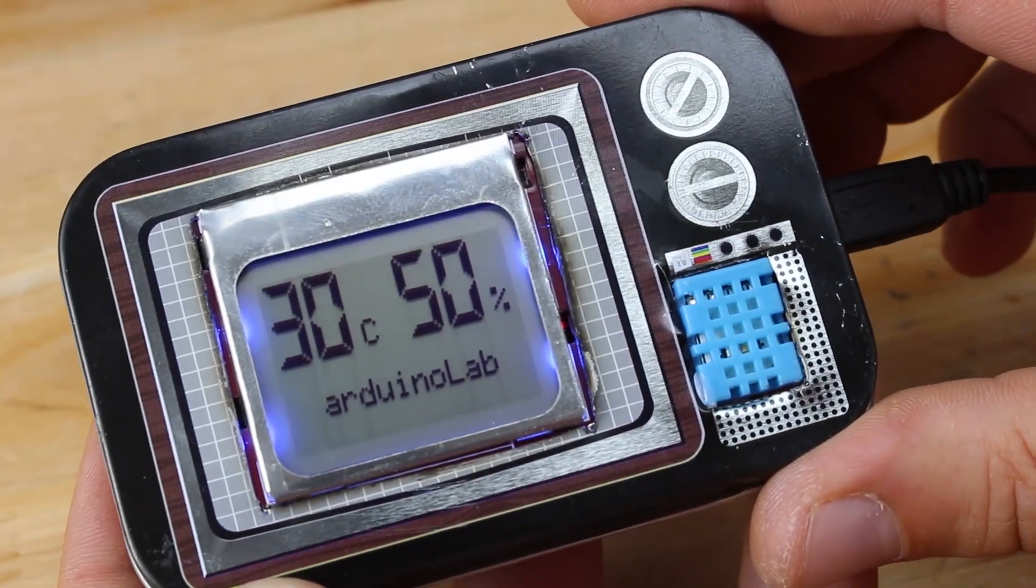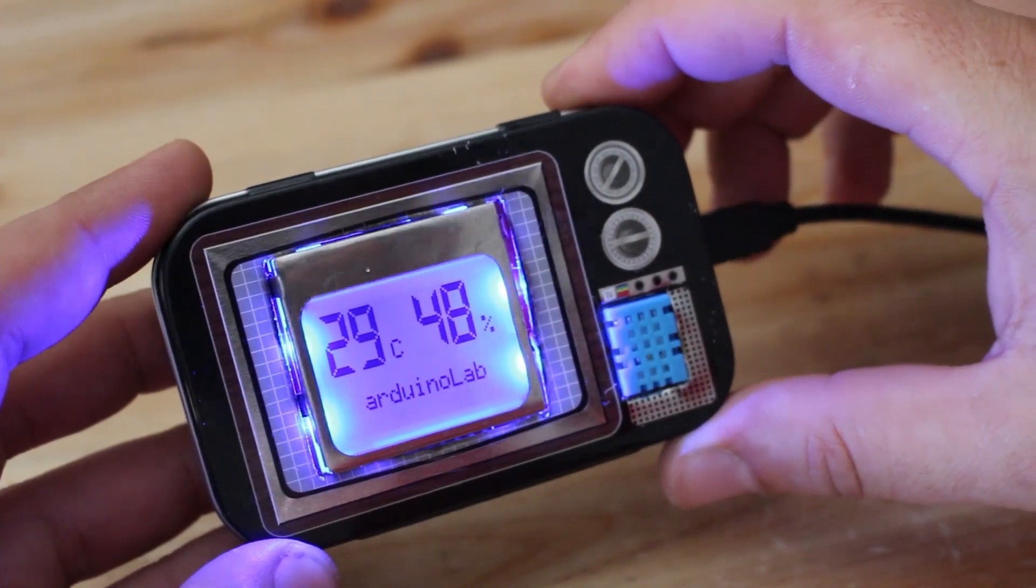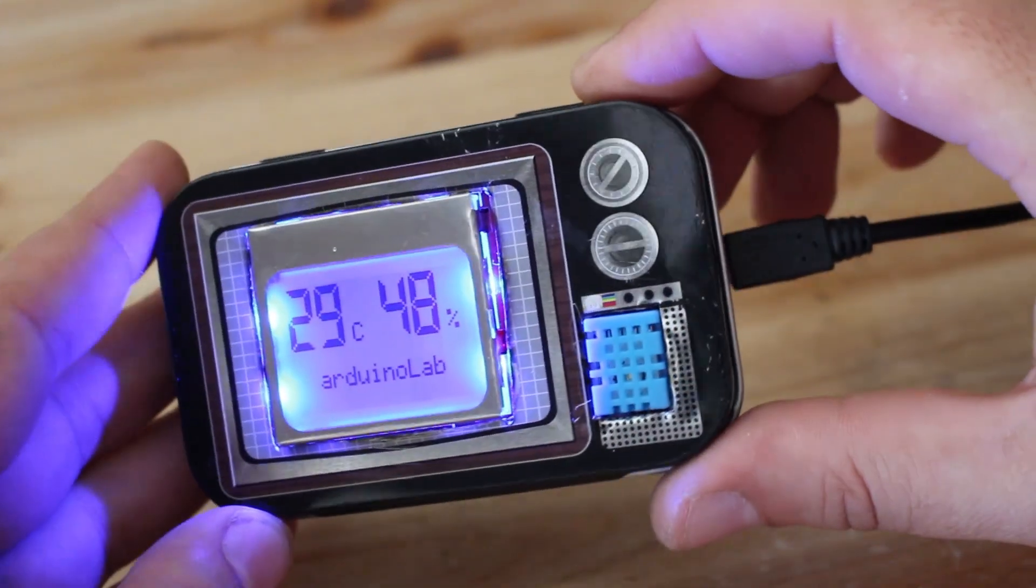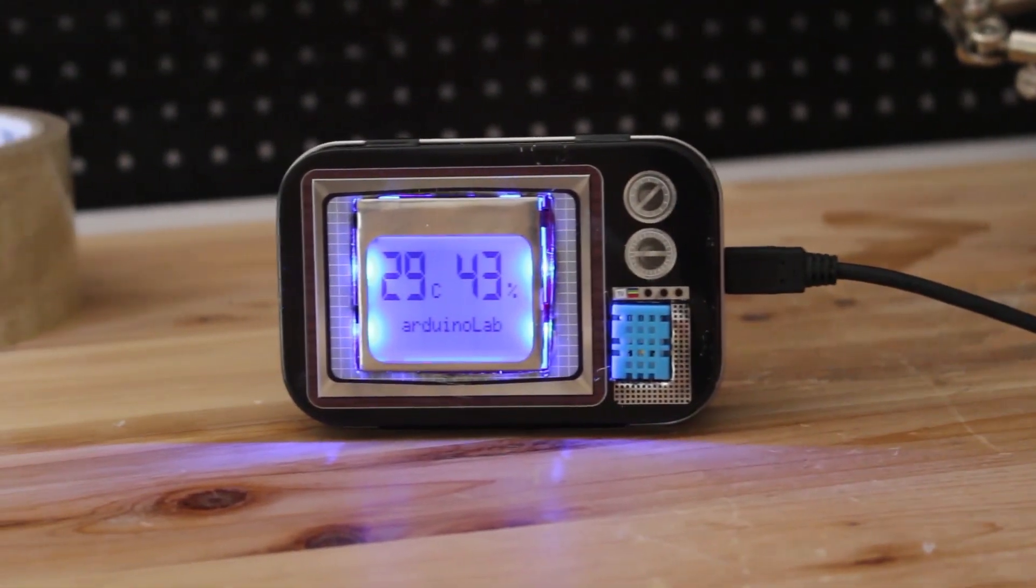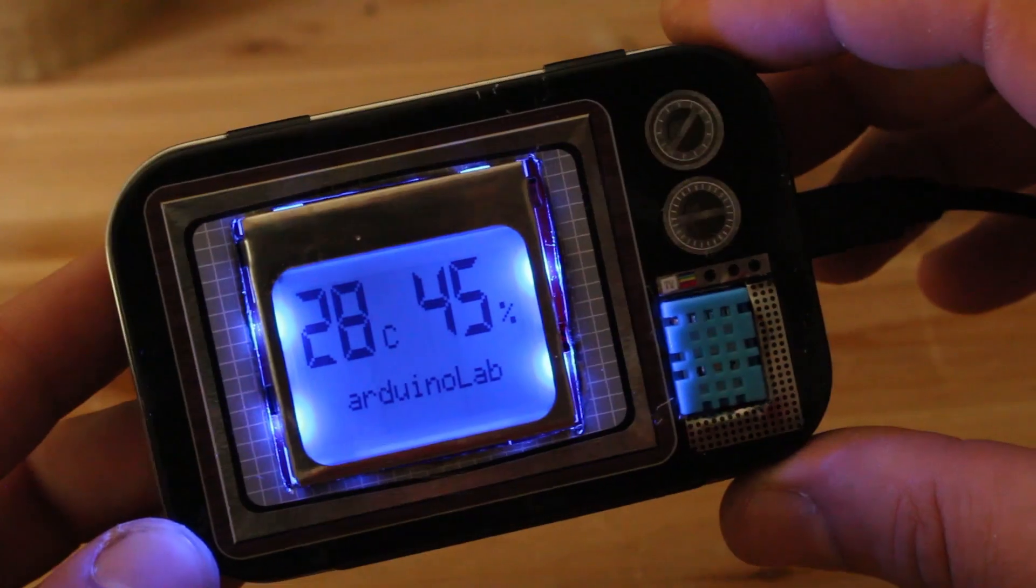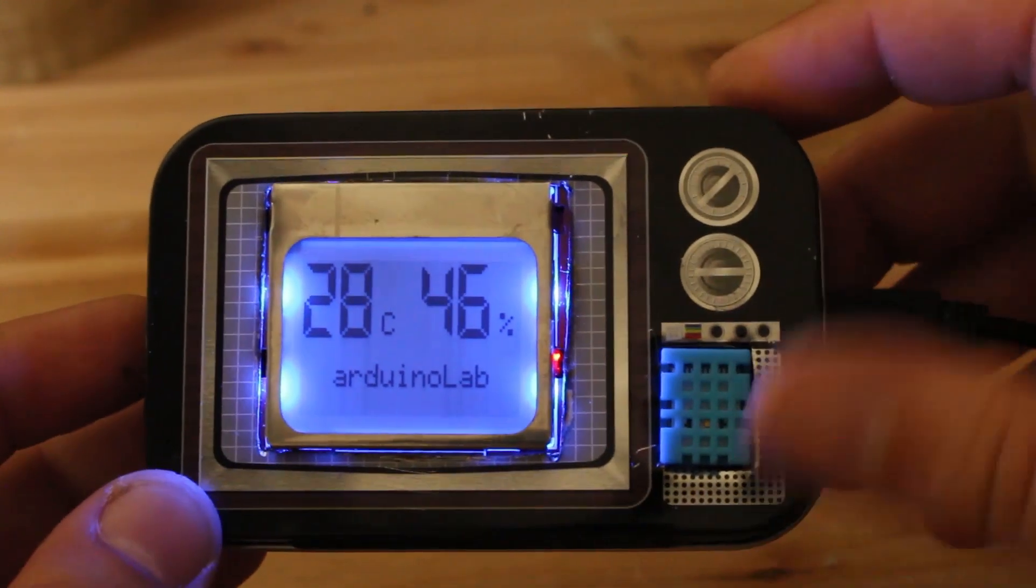As you can see, with big numbers it shows on the left side the actual temperature and on the right side of display it shows the humidity. Thanks for watching!